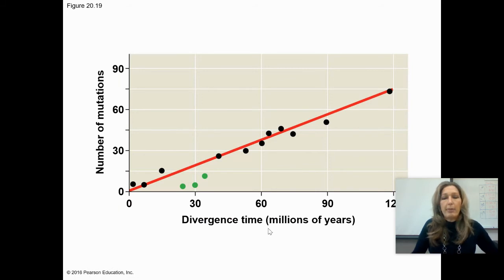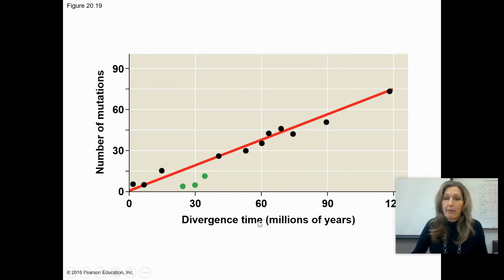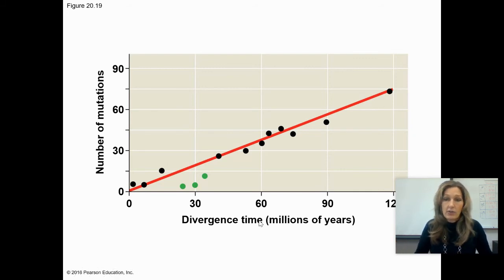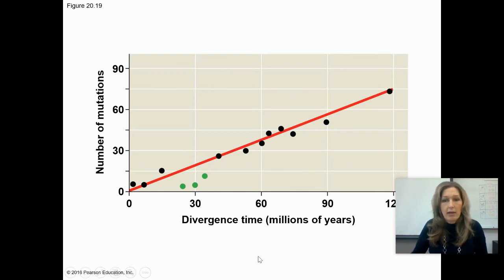Regarding molecular clocks: mutations happen, and certain genes accumulate mutations at a known rate over time. Based on the number of mutations accumulated in DNA, we can determine the point of divergence. Factors that influence those clocks include whether it's a highly conserved gene — if so, the number of mutations will be smaller; if not, the mutation rate will be faster. The reproduction rate of the organism's cells also changes the rate of the molecular clock.